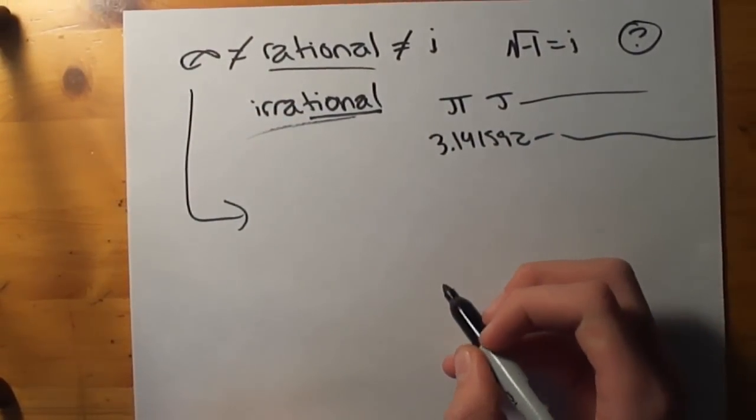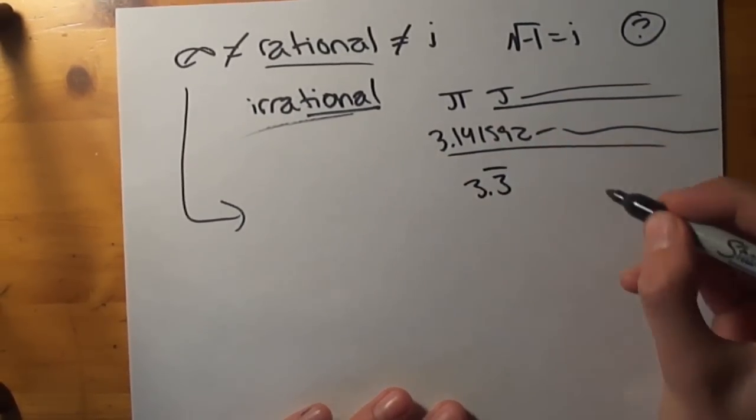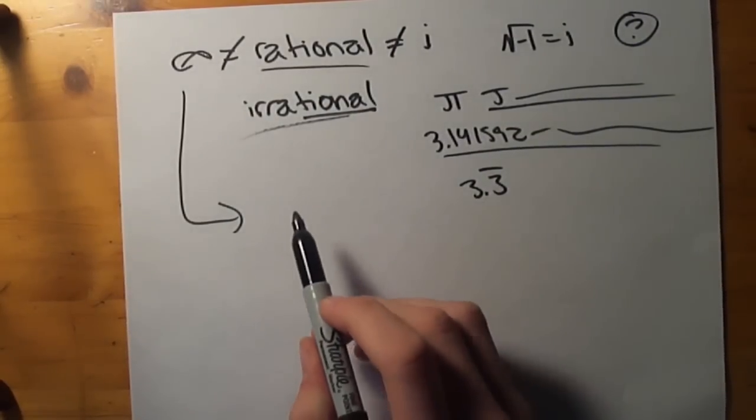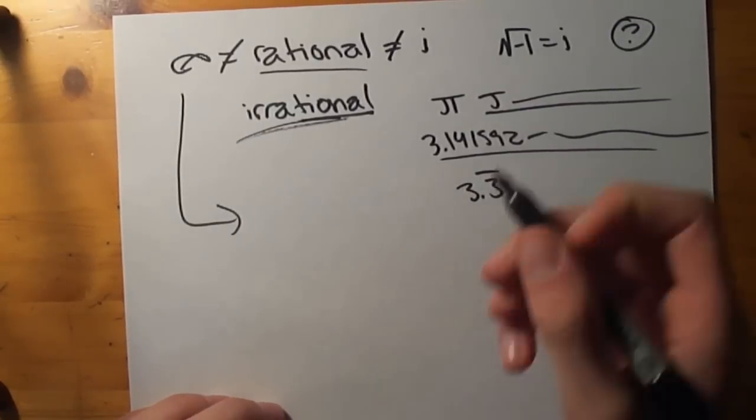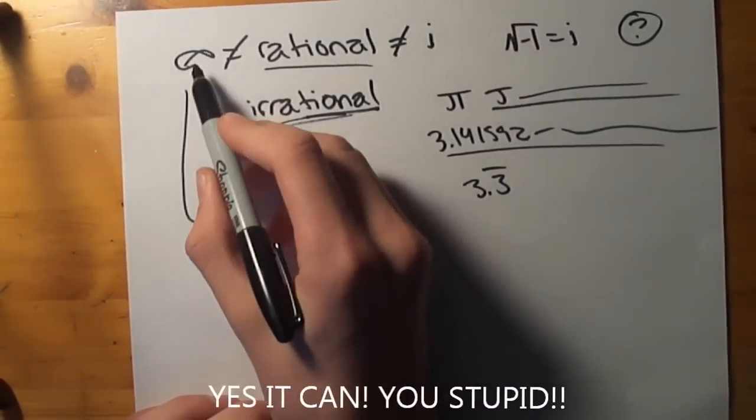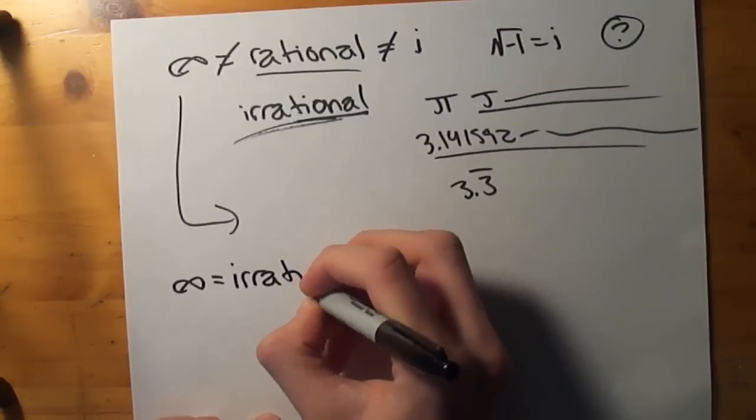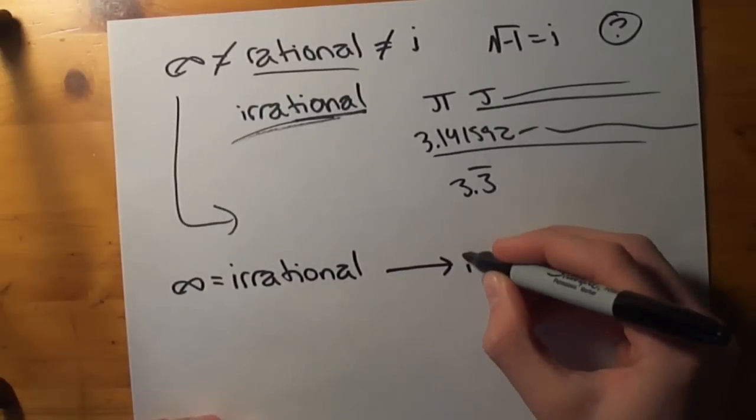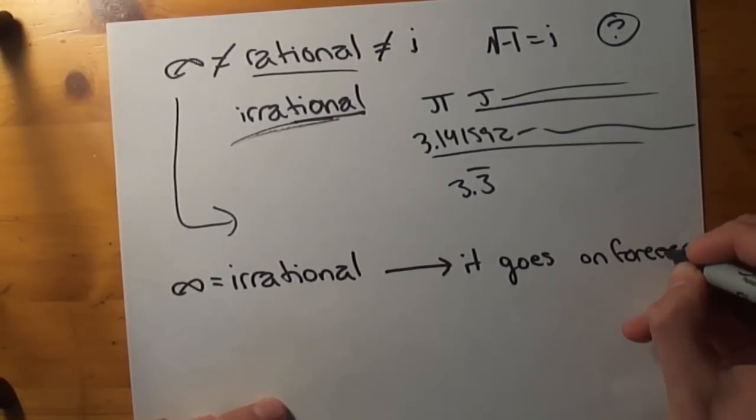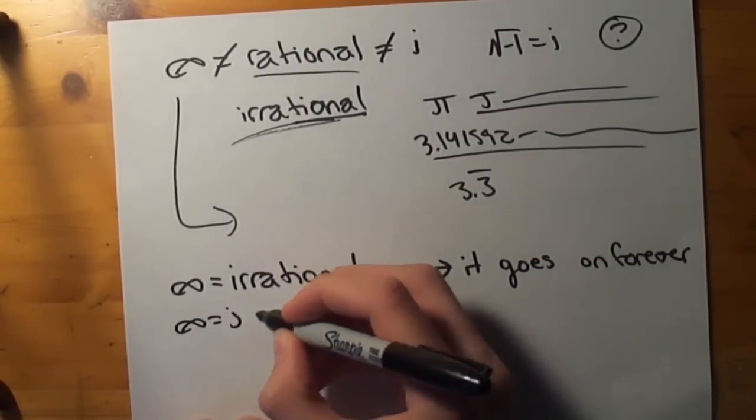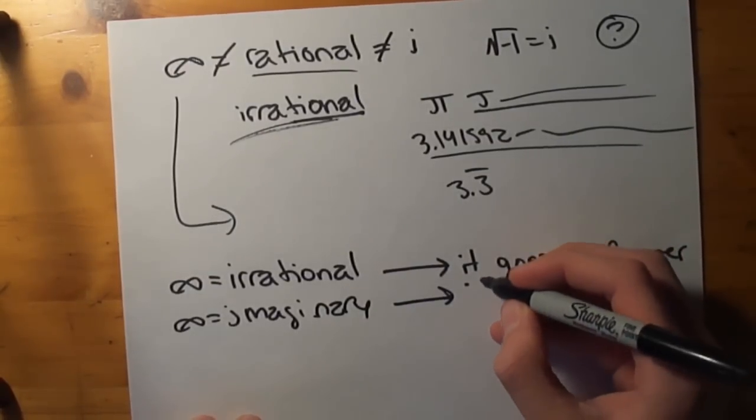We can take infinity, and it will go on forever, just like pi, or just like tau, or just like any other repeating decimal. 3.3 repeating, it'll go on forever, so it's irrational. However, because infinity is irrational, it can't be imaginary. But look at this. Infinity is irrational because... Here, I'll write you a proof. Infinity is irrational because it goes on forever. Definition of irrational.